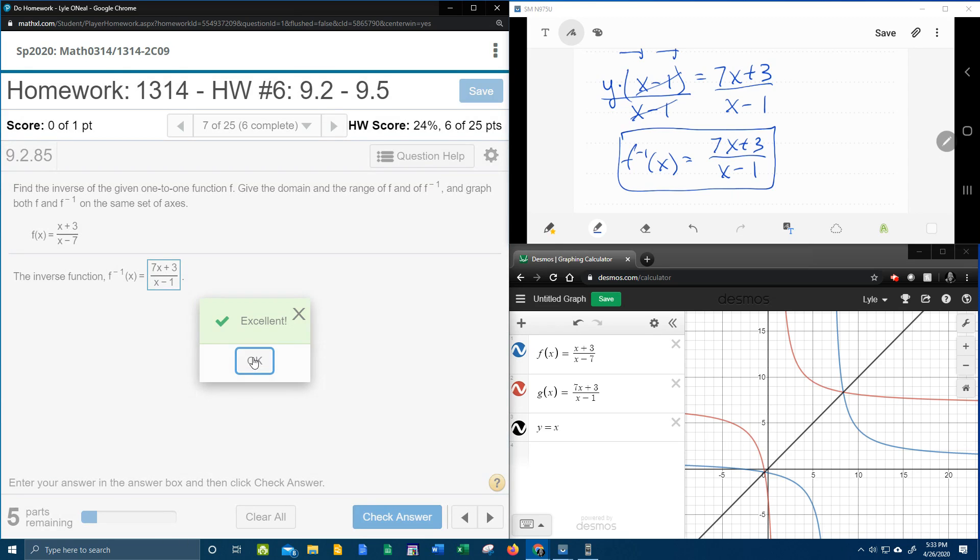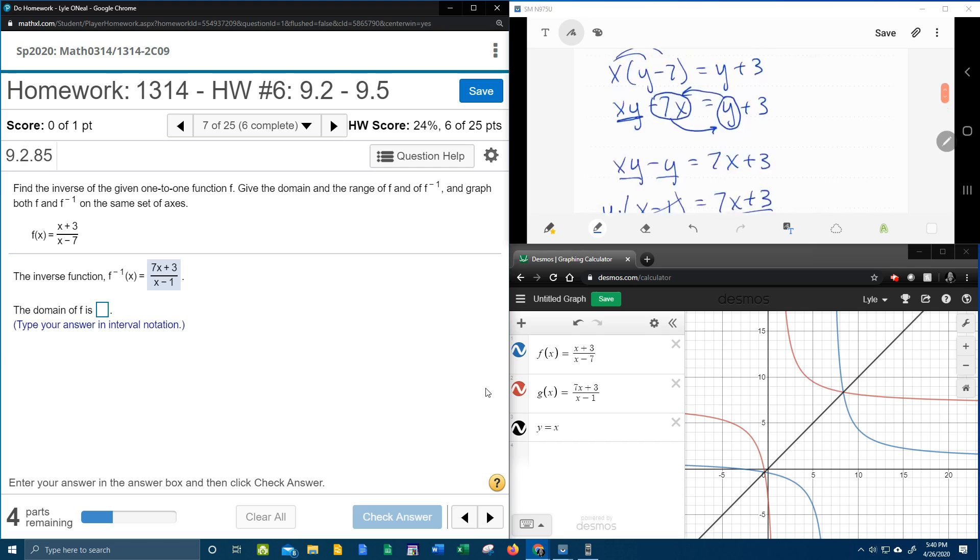And now what does it want? It wants us to find the domain of f. So if I go back to the original function, which was f of x equals x plus 3 over x minus 7.